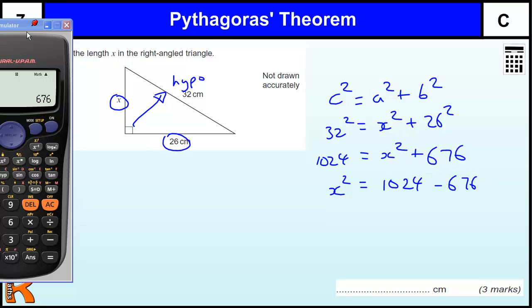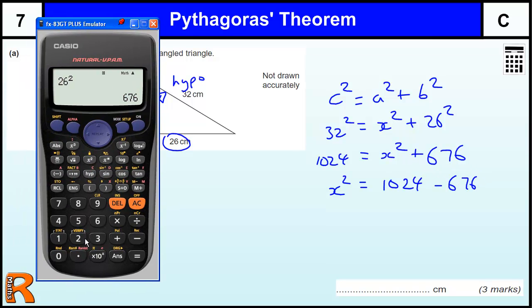So we subtract those two. 1024 minus the answer, so the last question is 348.